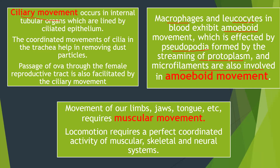Ciliary movement occurs in the internal tubular organs where there is ciliated epithelium — cilia are present there. It is a coordinated movement of the cilia in the trachea that helps in removing dust particles. You also see it in the oviduct, where the passage of ova through the female reproductive tract is facilitated by ciliary movement. Then the last type is muscular movement — the movement of limbs and jaw comes under muscular movement.